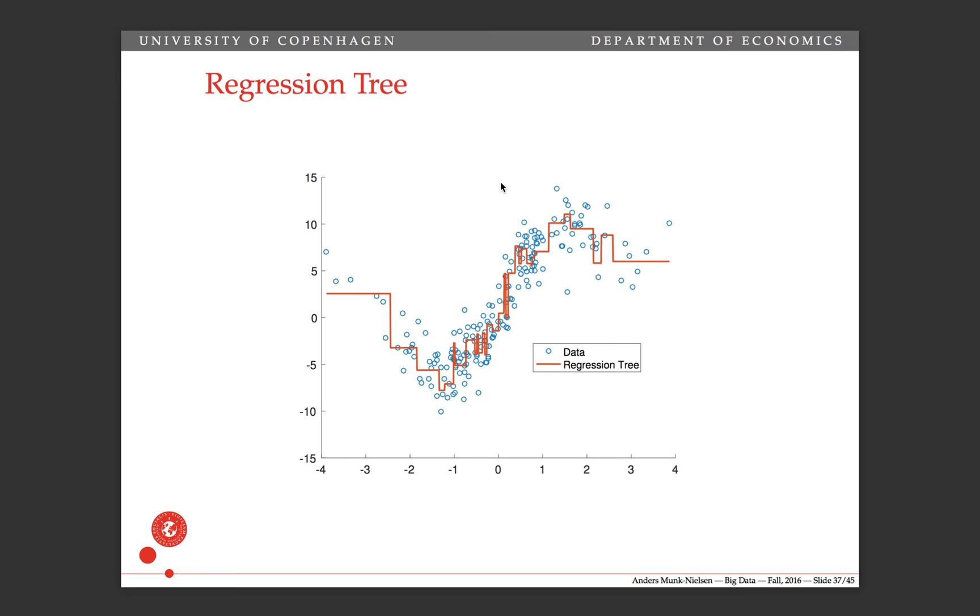All right, so this is a regression tree example that we've seen before. We can see that it has a lot of variance. It's a very jittery prediction function. Here's if we have two trees in a bag. And this is a random forest, but because there's just one variable, this is just a bagged regression tree with two trees in the bag. And what you can see is that the jitteriness starts to go down.